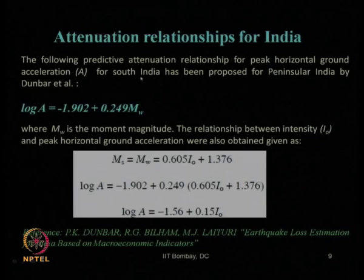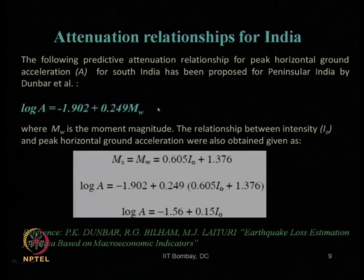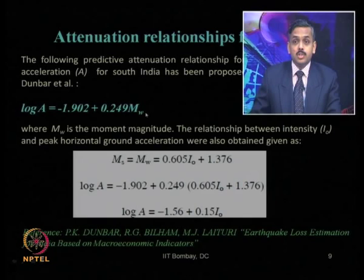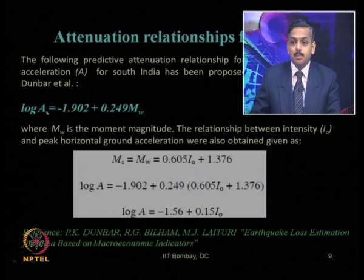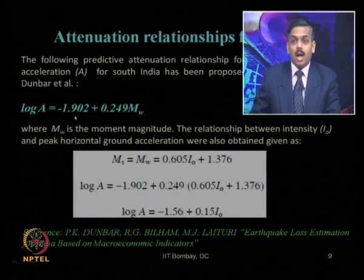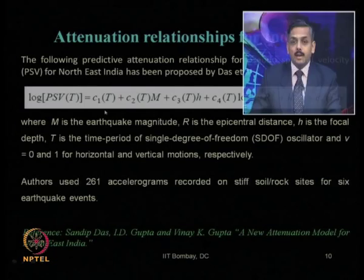A major limitation of the Danbar et al. equation is that it does not include any distance parameter — that is, the hypocentral distance, which is a very important parameter in any attenuation relationship. The attenuation relationship, by definition, describes how a parameter decreases with increasing distance from the earthquake origin point. The absence of this distance parameter is a significant drawback.